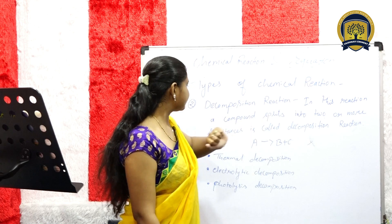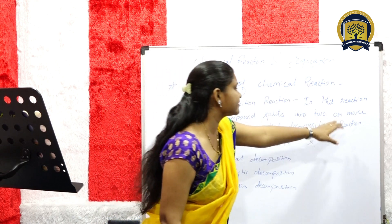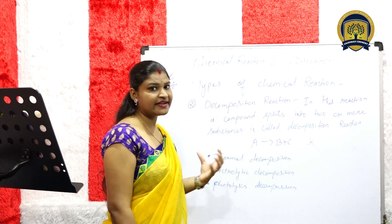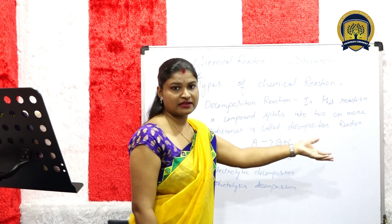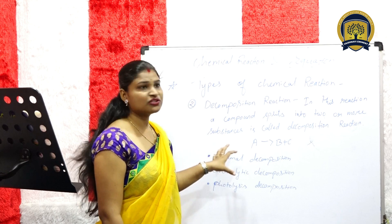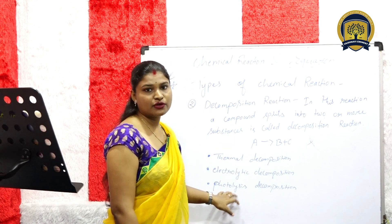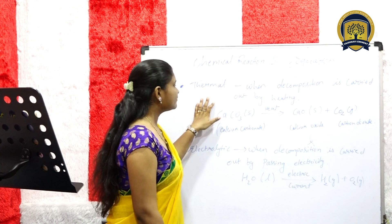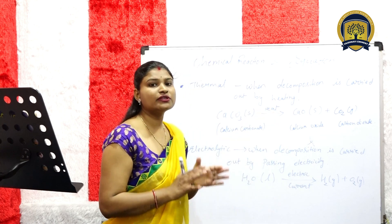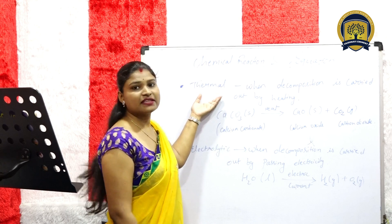Second, decomposition reaction. In this reaction, a compound splits into two or more substances. It means we have only one substance on the reactant side and we have one or more products. We have three types of decomposition reactions: first, thermal decomposition; second, electrolytic decomposition; third, photolysis decomposition. Thermal decomposition: when decomposition is carried out by heating.